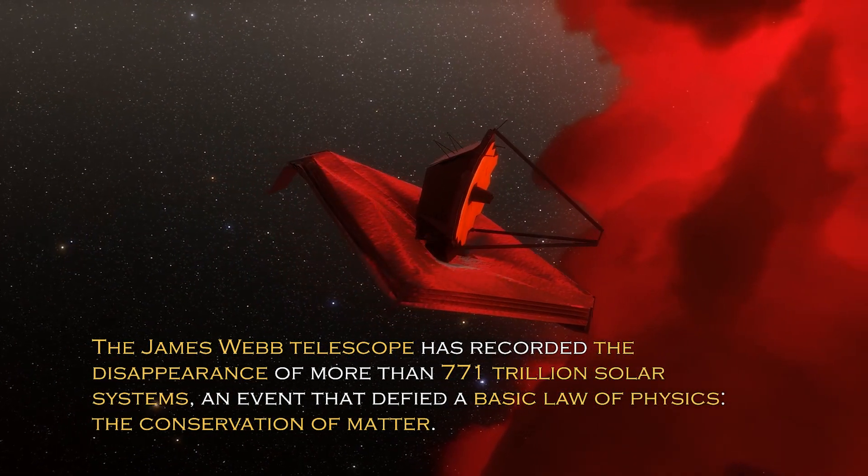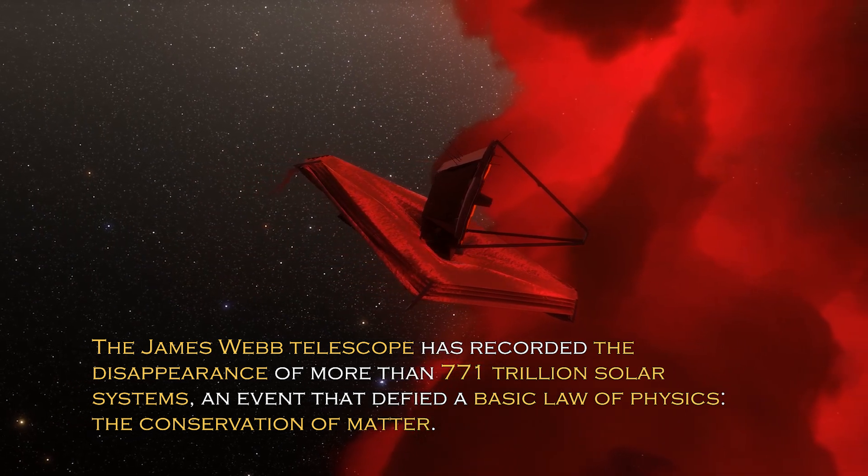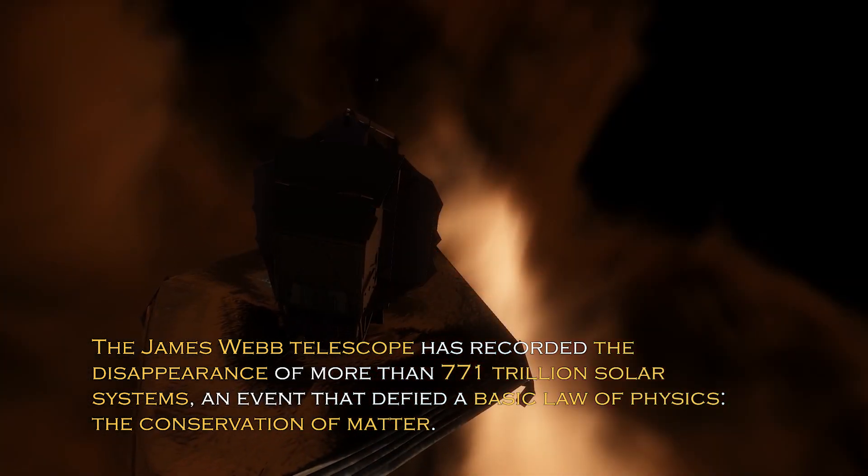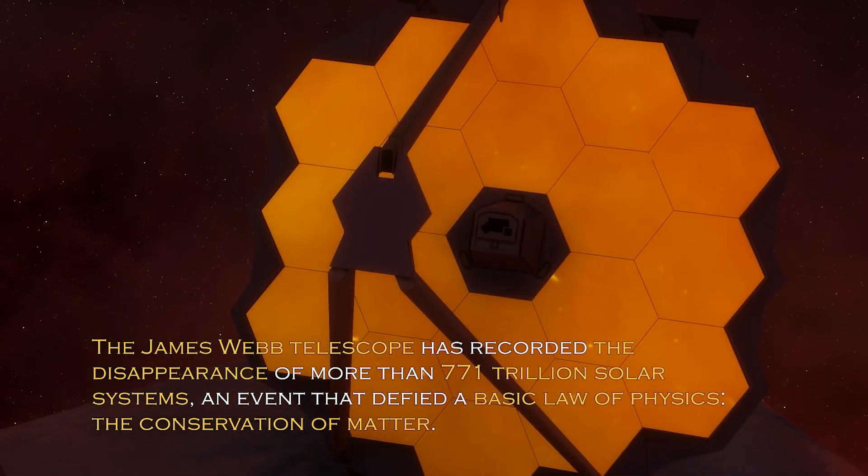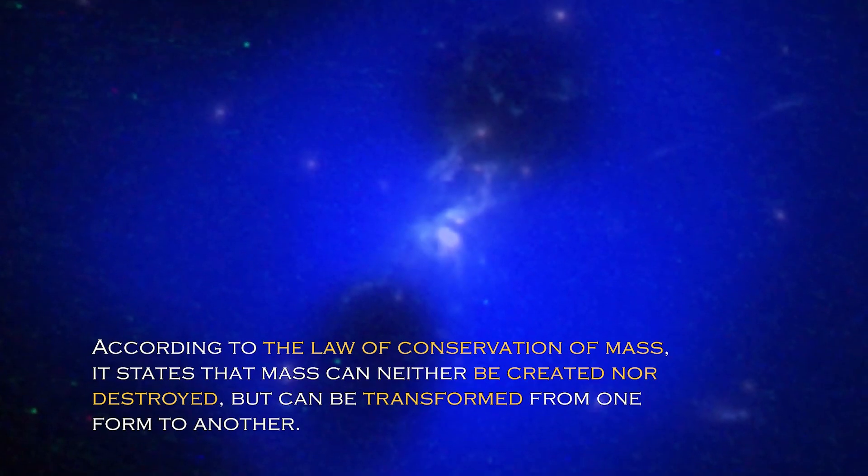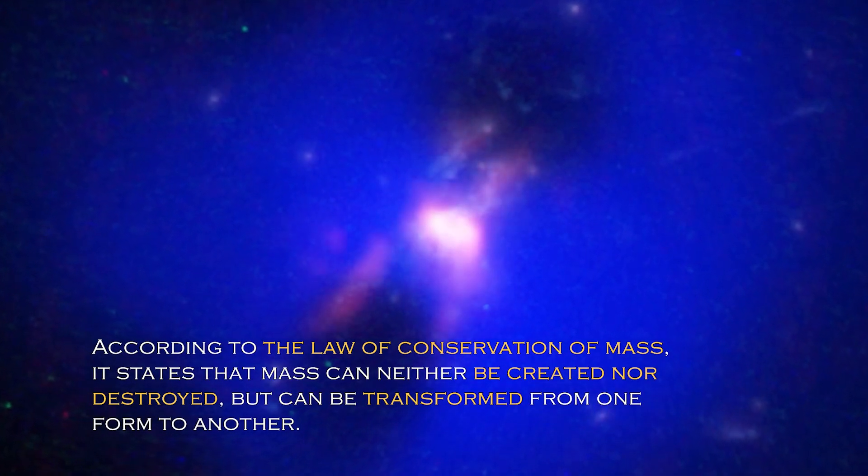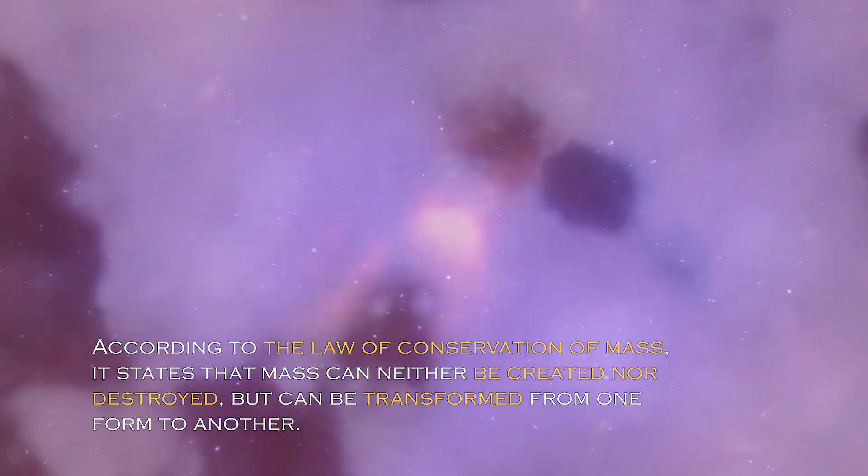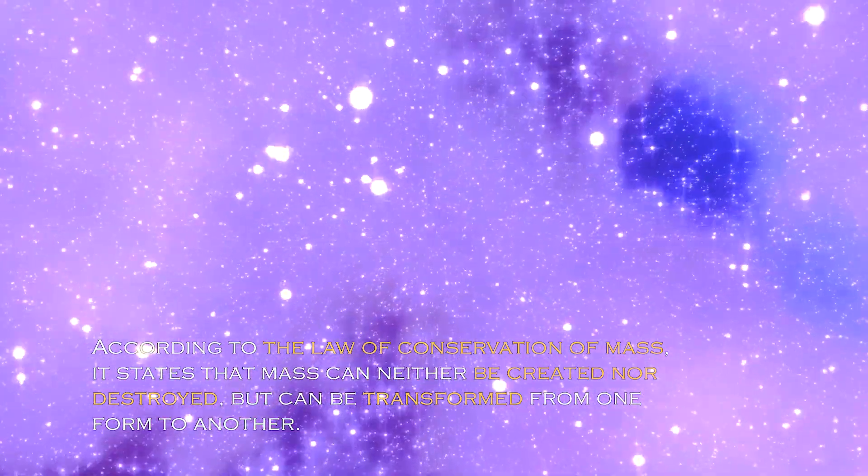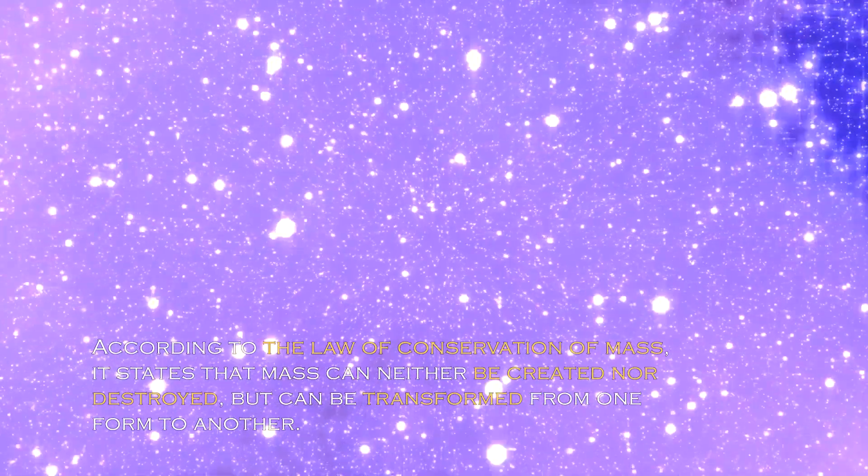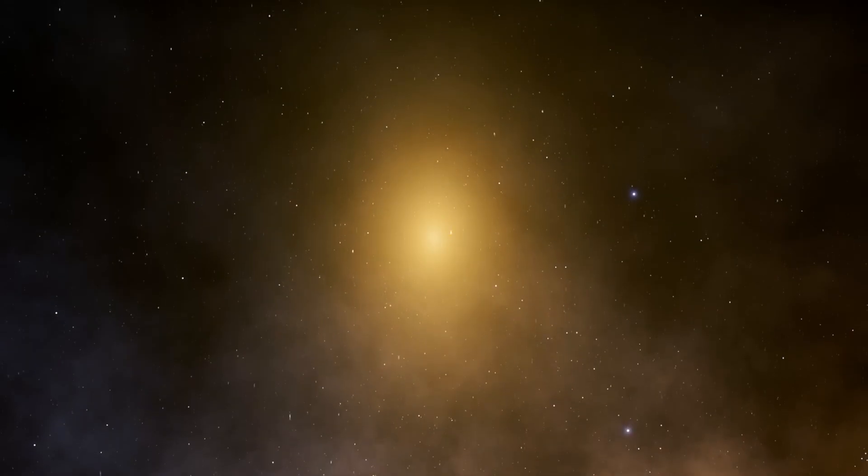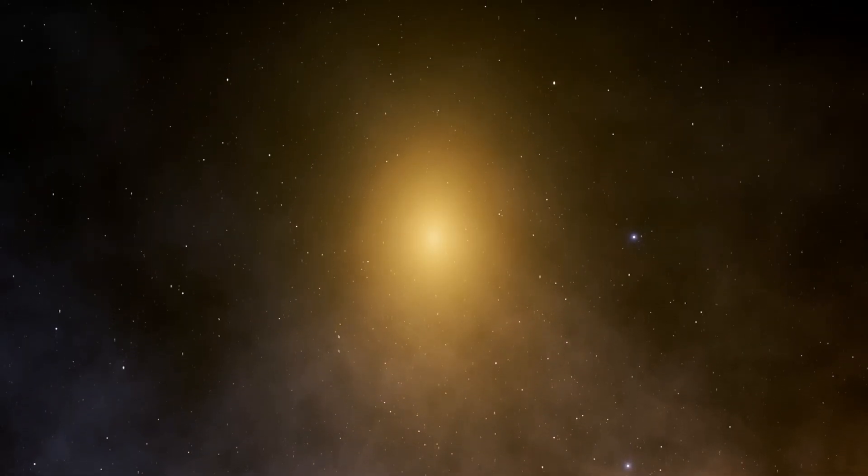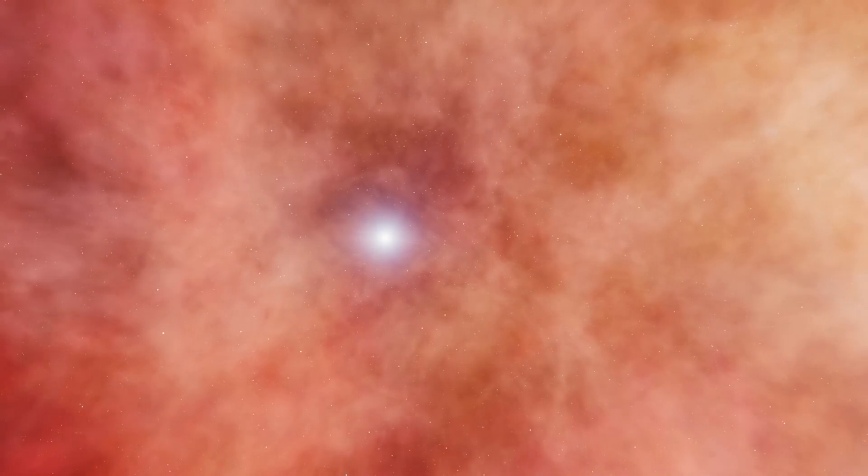The James Webb telescope has recorded the disappearance of more than 771 trillion solar systems, an event that defied a basic law of physics, the conservation of matter. According to the law of conservation of mass, it states that mass can neither be created nor destroyed, but can be transformed from one form to another. Since research on the universe has been based on principles such as this one, it is challenging for scientists to explain the disappearance of an entire world composed of stars and planets from the universe. Were they destroyed or did they simply change?